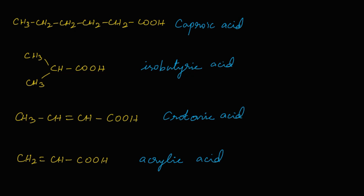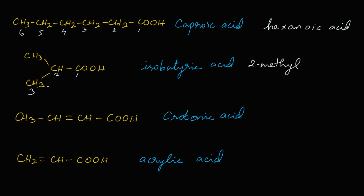Now the IUPAC names: the six-carbon compound has hexane as the parent chain, and with the COOH functional group the suffix is 'oic acid', so hexanoic acid is the IUPAC name of caproic acid. For isobutyric acid, a methyl group is attached to the second carbon of a three-carbon chain, giving 2-methylpropanoic acid.